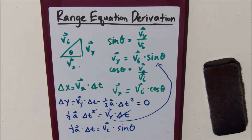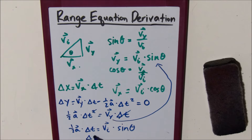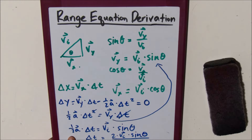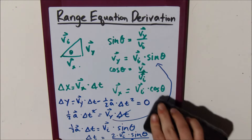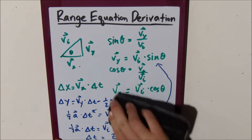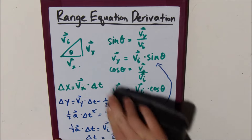Now we divide by one-half and divide by acceleration — which is the same as multiplying by 2 — giving us delta t equals 2 times v initial times sine theta, divided by acceleration. So we've got our delta t.